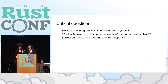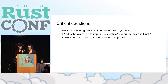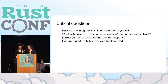We also asked: is Rust supported on the platforms that Tor supports? Diversity is a good thing in the Tor network — we don't want a single bug on one operating system to take out the entire network. Finally, another question was can we reproducibly build Tor with Rust enabled. Reproducibility is really important for user confidence in the distributed binary and for reproducing reported bugs.